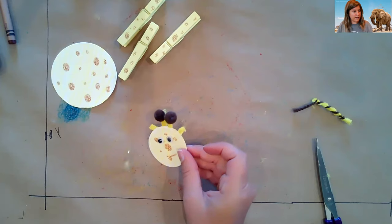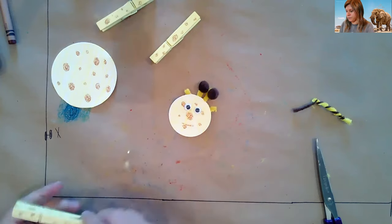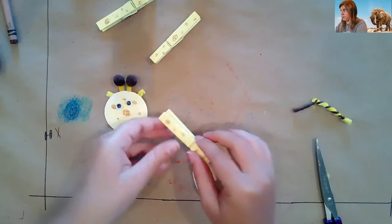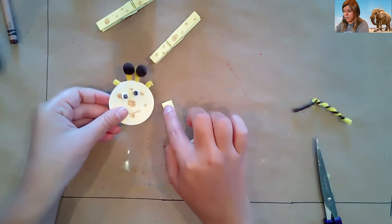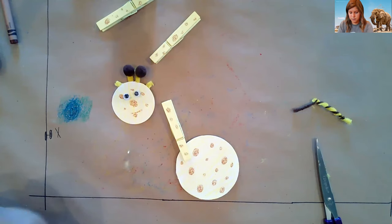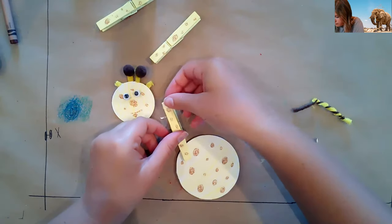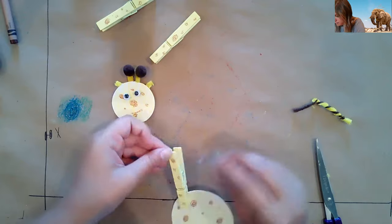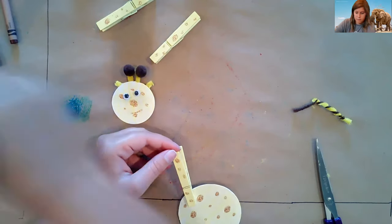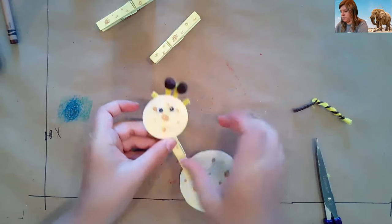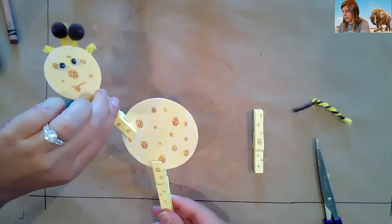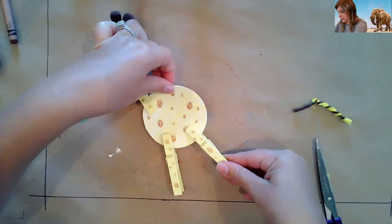So I'm going to clip this on to his body, just like that. And then we're going to put a glue dot right here, and we're going to attach his head just like so. Now he has a neck. Now we need his legs. And his legs just clip on just like this. We need one more thing. His tail, of course.